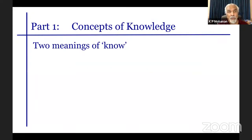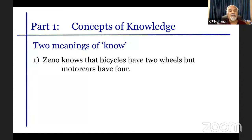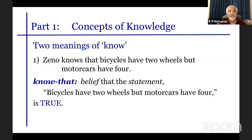We begin by noting that the English verb 'know' has two meanings. When you say 'Zeno knows that bicycles have two wheels but motorcars have four,' we're talking about a piece of information. We're also saying that the statement that bicycles have two wheels and motorcars have four is true — we believe that statement to be true. This is the 'know-that' form of knowledge, which is a belief.